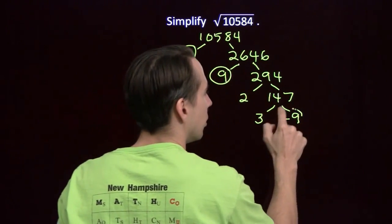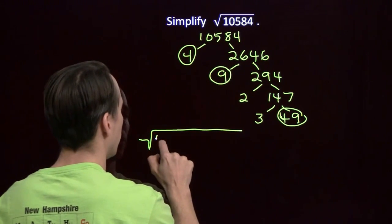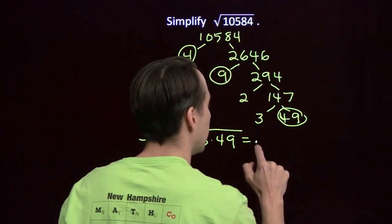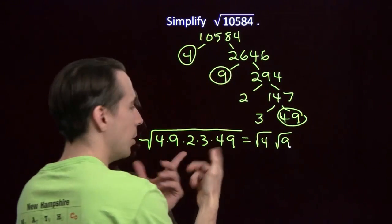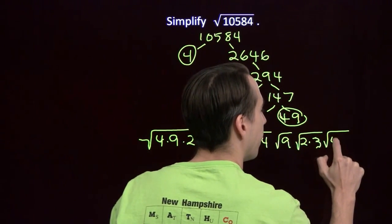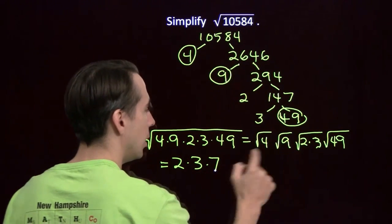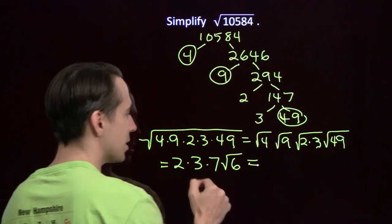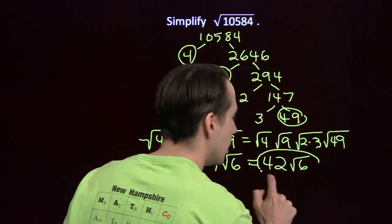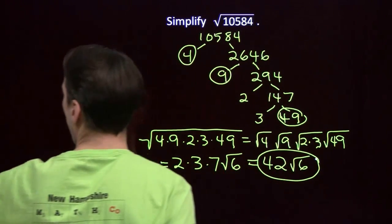So I've got 3 perfect square factors I can pull out. I can write that square root as the square root of 4 times 9 times 2 times 3 times 49. Now I can break this up: square root of 4 times the square root of 9, leaving the 2 and the 3 as 2 times 3, and the square root of 49. Square root of 4 is 2, square root of 9 is 3, square root of 49 is 7. 2 times 3 is 6, times 7 is 42. So the square root of 10,584 simplifies to 42 times the square root of 6.